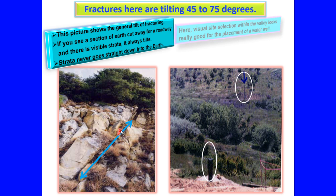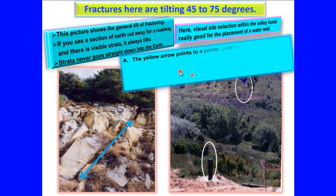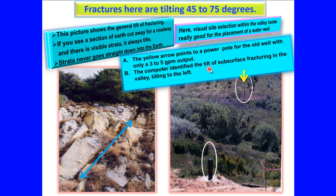Here, visual site selection within the valley looks really good for the placement of a water well. The yellow arrow points to a power pole for the old well with only a three to five gallon per minute output. The computer identified the tilt of subsurface fracturing in the valley tilting to the left. Drilling into this fracture system generated a yield of fifty gallons per minute.